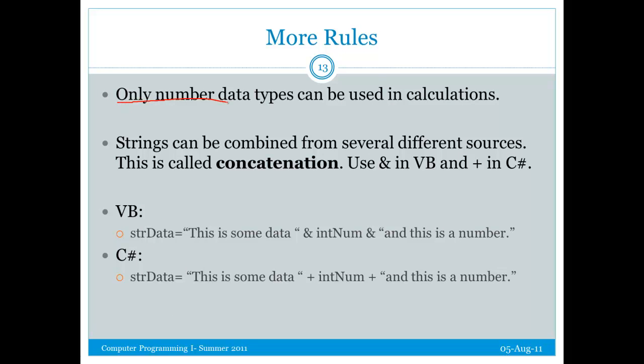Alright, so only a number data type can be used in calculations. I can't add a plus b. If those are strings, I can't add them together and expect a calculation. However, I can add them together, combine them, and this is called concatenation. Now, in VB, the concatenation operator is an ampersand. So this variable here, strData, the value of it is going to be the string, this is some data, and the value of the variable intNum, and this is a number. So if intNum is 7, this statement would read, this is some data 7 and this is a number.